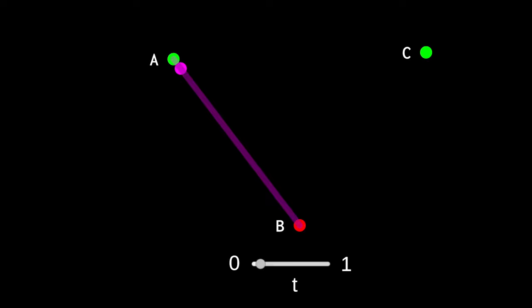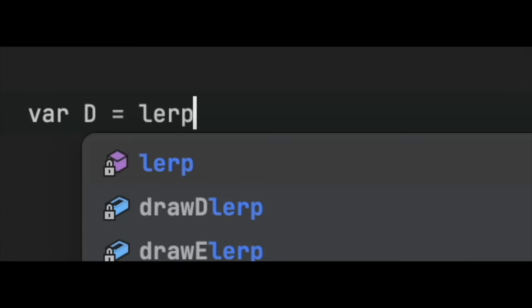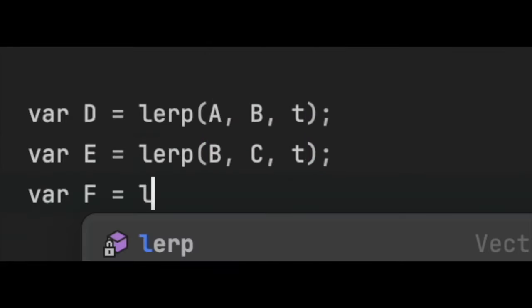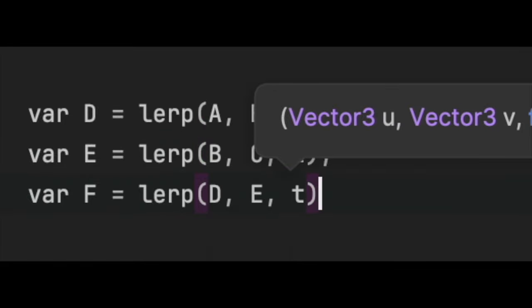When T is 1, LERP outputs the end point. And we're going to vary T smoothly from 0 to 1. So the position of D given T is simply LERP A, B, T. The position of E is LERP B, C, T. And lastly F is LERP D, E, T. F is the Bezier curve. That's it.